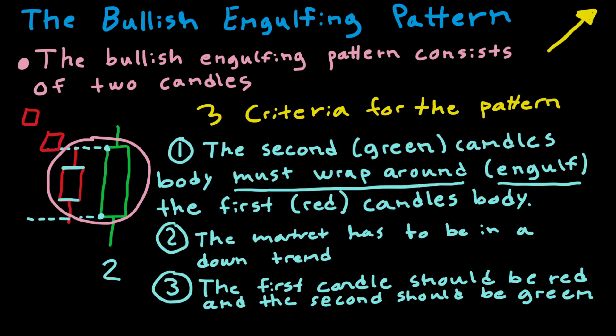The third criteria is that the first candle should be red and the second candle should be green, just as shown in the picture. The only exception where we accept a different color for the first candle is if that candle is a doji — and if you want to learn more about the doji candle, there is a video linked in the corner.